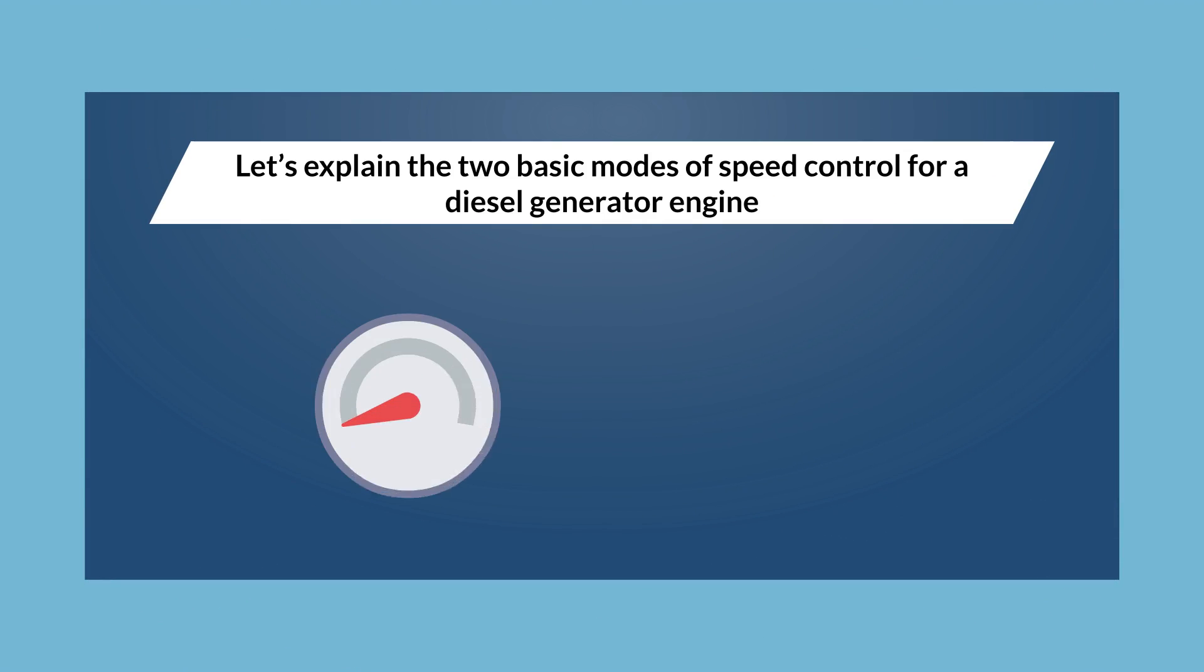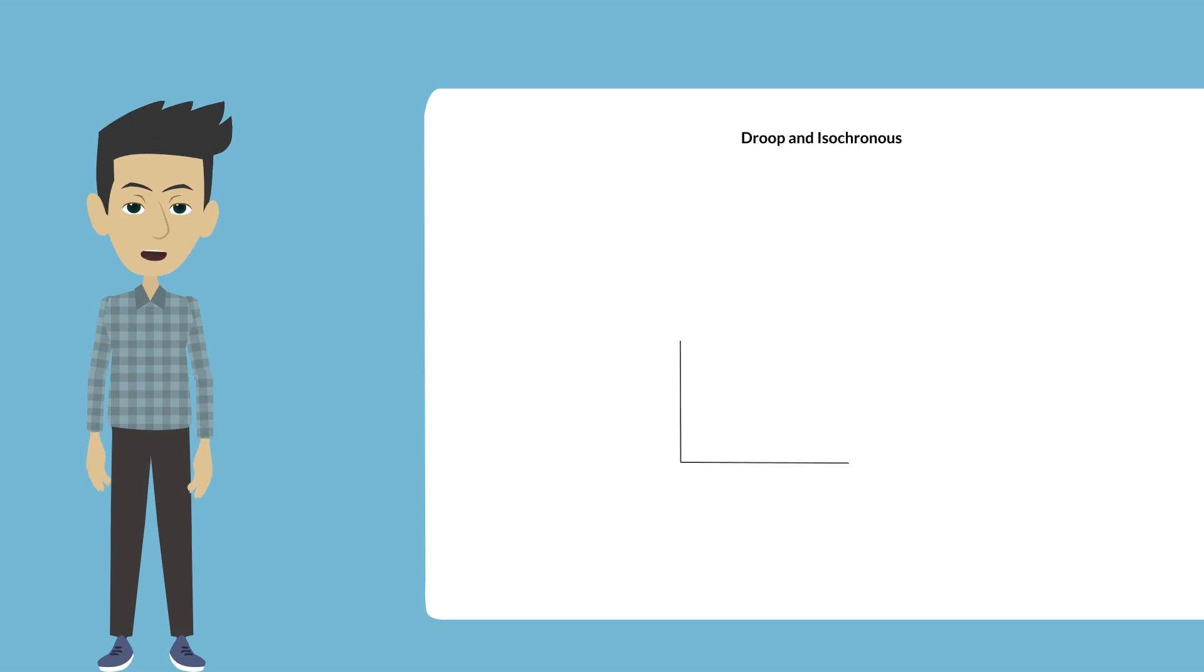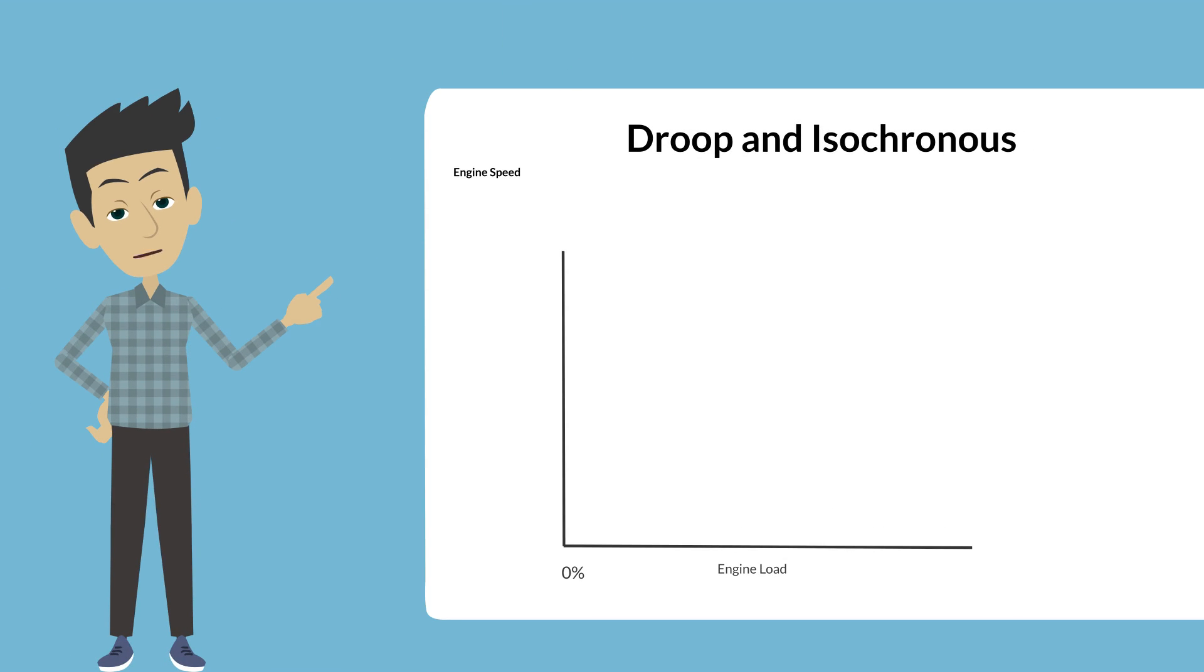Let's explain the two basic modes of speed control for a diesel generator engine: droop and isochronous. These modes define how the engine's governor regulates the engine's speed during operation.